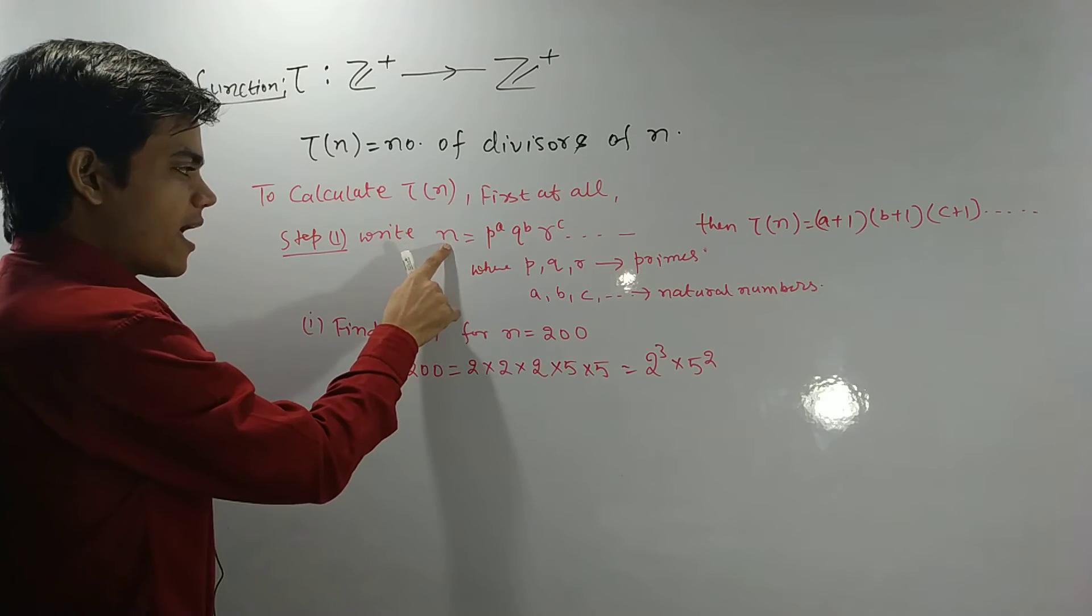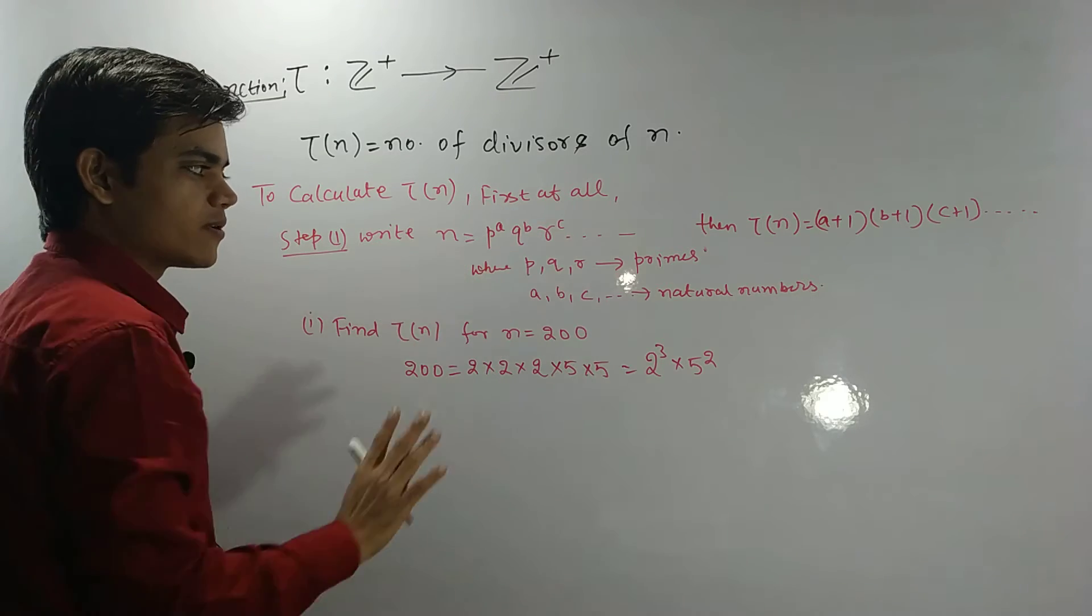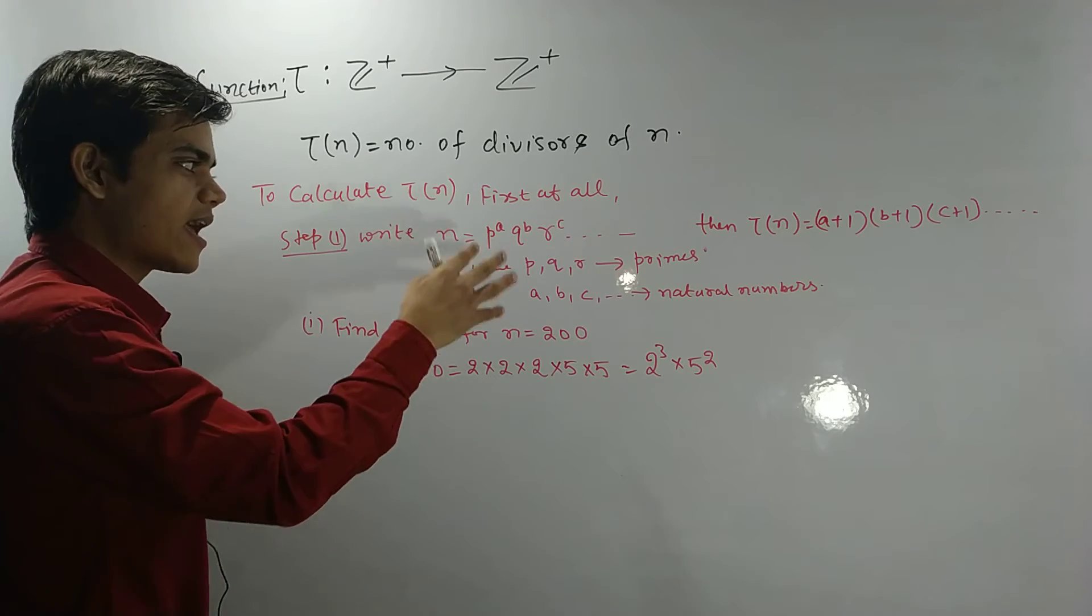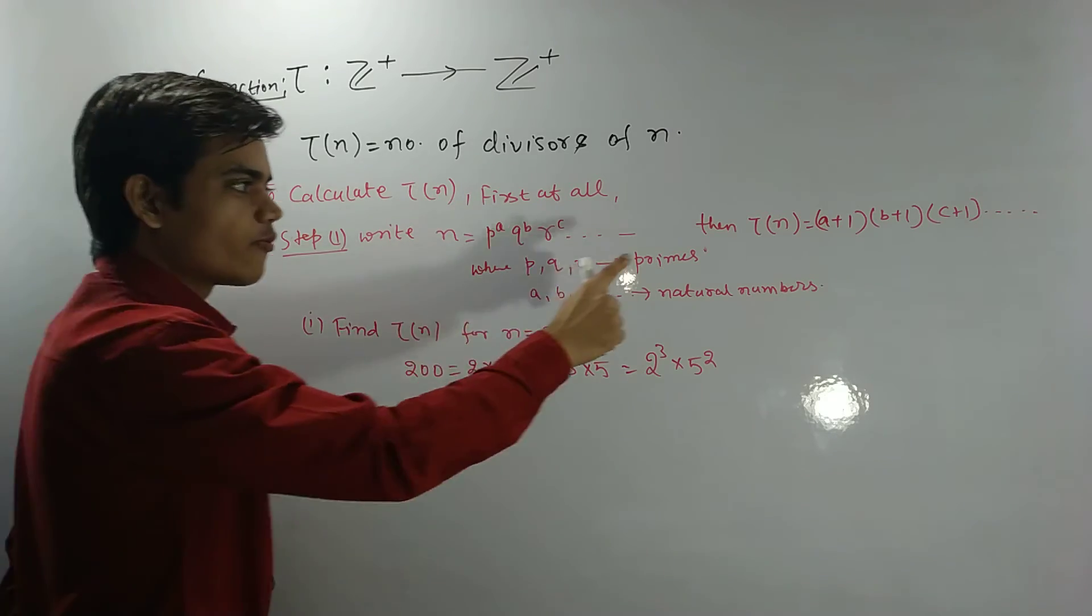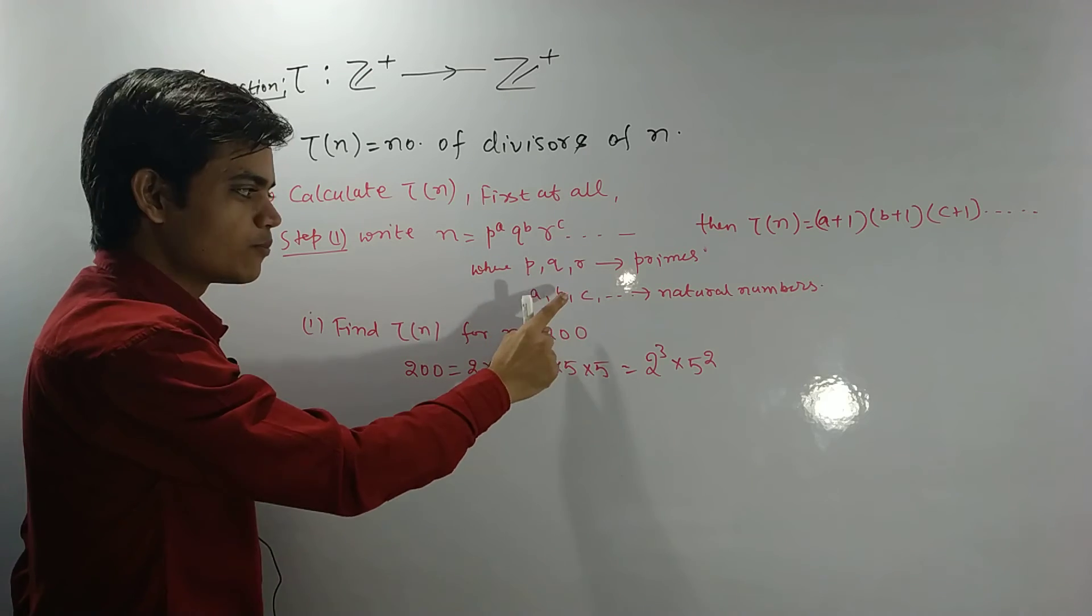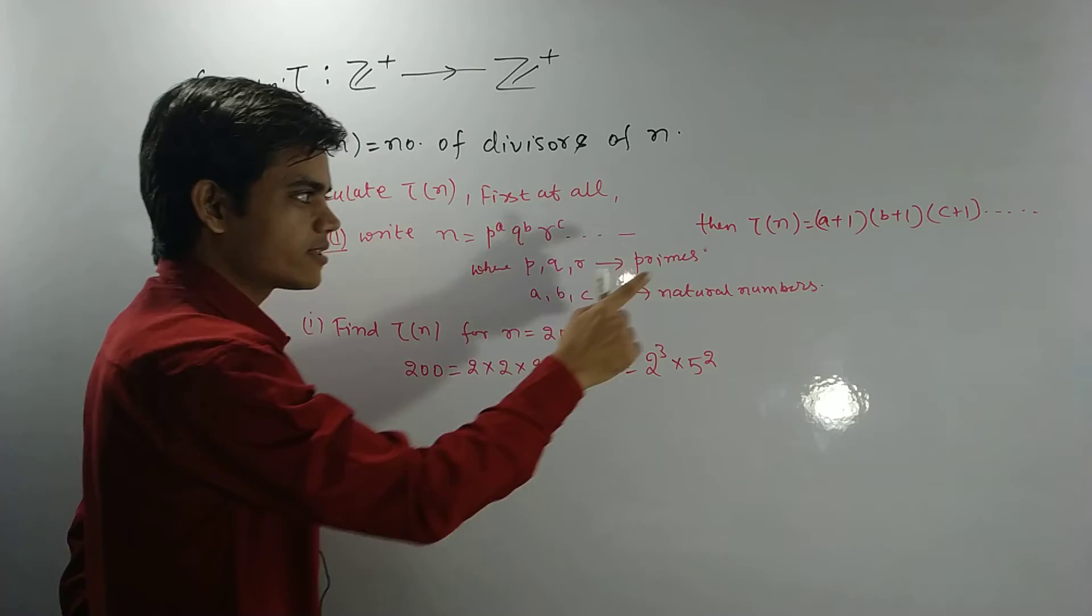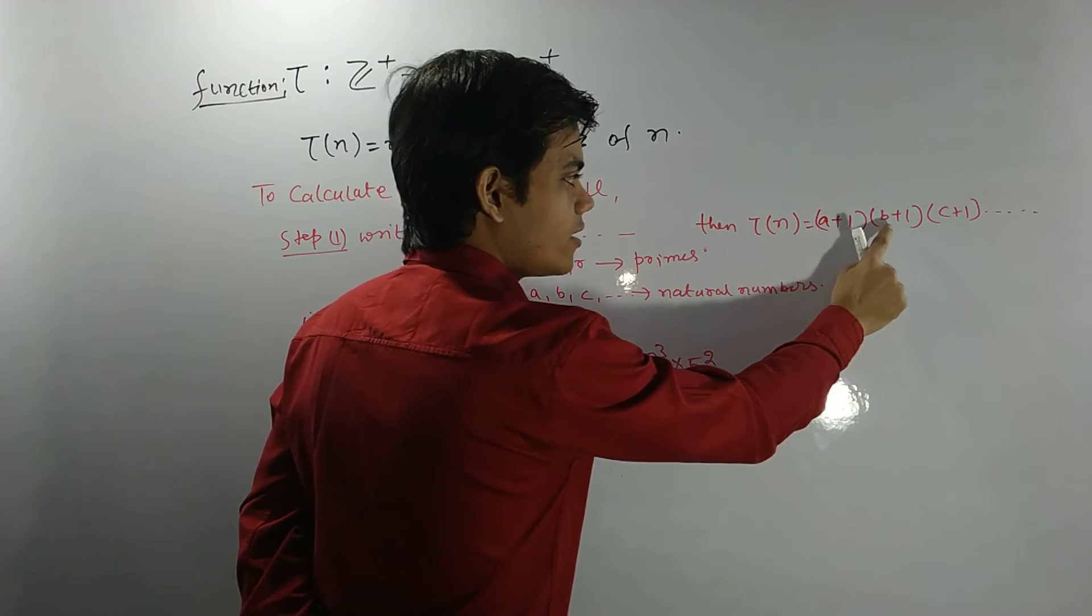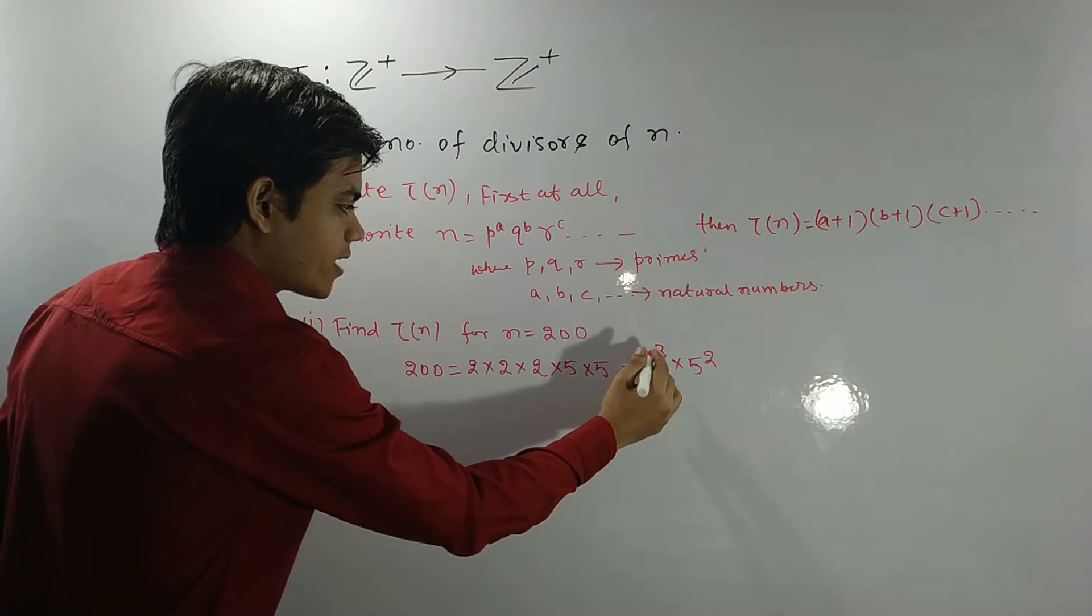Once again, let me repeat it. n equals p to the power a, q to the power b, r to the power c. Okay, we have written this n as the product of power of primes. And in the formula of Tau(n), these are not important. The important things are a, b, and c. And how would you calculate this Tau(n)? a plus 1, times b plus 1, times c plus 1.